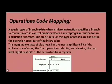Operations code mapping: a special type of branch exists when a micro-instruction specifies a branch to the first word in a control memory where a micro-program routine for an instruction is located. The status bits for this type of branch are the bits in the operation code part of the instruction.